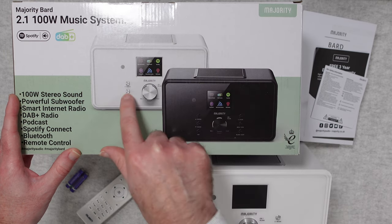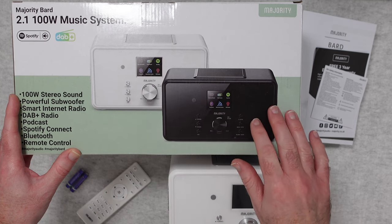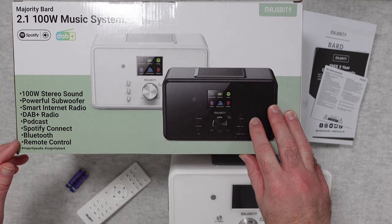Now you can see on the front of the box here there's two different colours available. There's a black version or the white version that we've got here. And we've also got the main specifications and features.